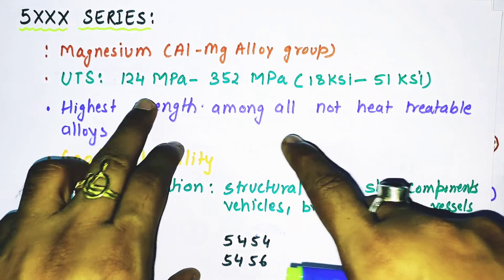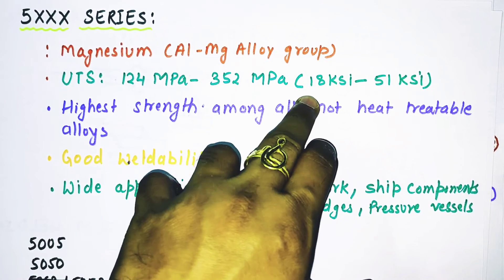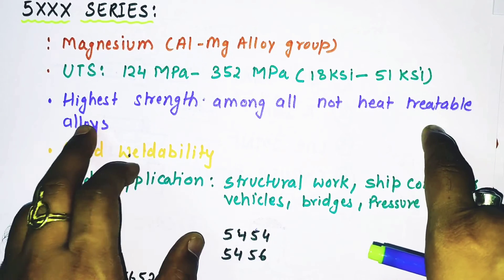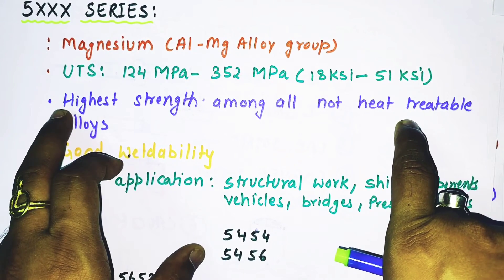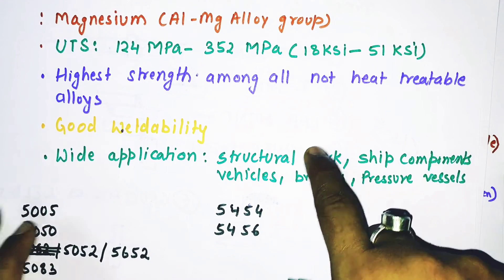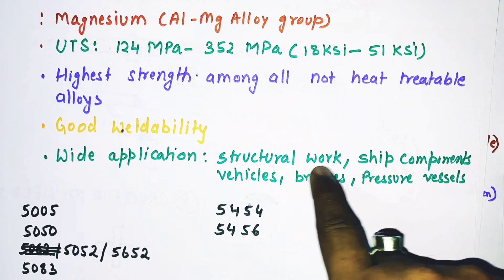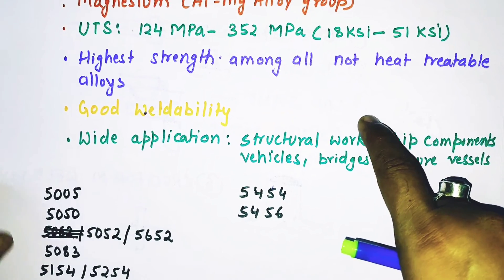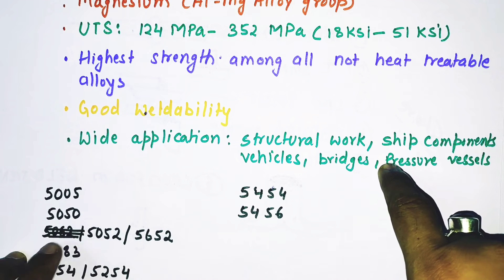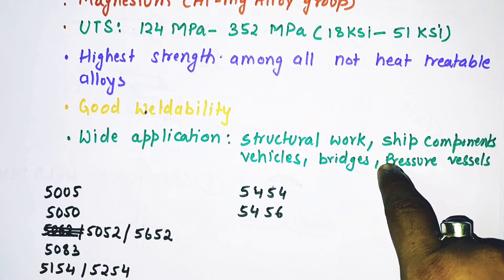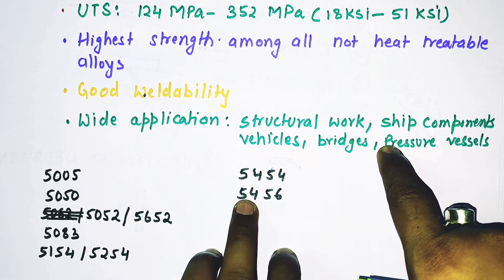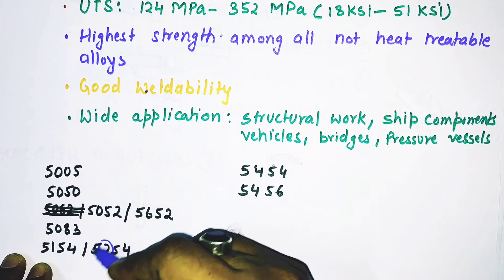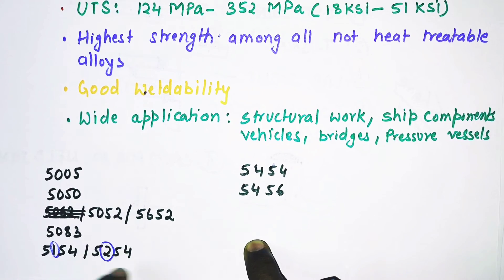Among all non-heat-treatable alloys, the 5xxx series has the highest strength. It has good weldability and very wide application — used in structural work, ship components, vehicles, bridges, and pressure vessels. The alloying element is magnesium. Alloys in this group include 5005, 5050, 5052, 5056, 5083, 5154, 5254, 5454, and 5456. The second digit change — for example 5154 to 5254 — indicates a modification of the original alloy.